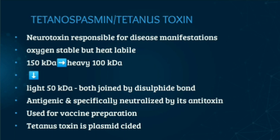This tetanus toxin is antigenic and specifically neutralized by its antitoxin. Antitoxin is an antibody that counteracts a toxin — anti means against, so antitoxin means against a bacterial toxin. This tetanus toxin can be converted to toxoid form using formaldehyde. Toxoid means inactivated toxin. Since we convert it into toxoid form, it loses its virulence property but retains its antigenic property, and because of this reason we can use it for vaccine preparation.